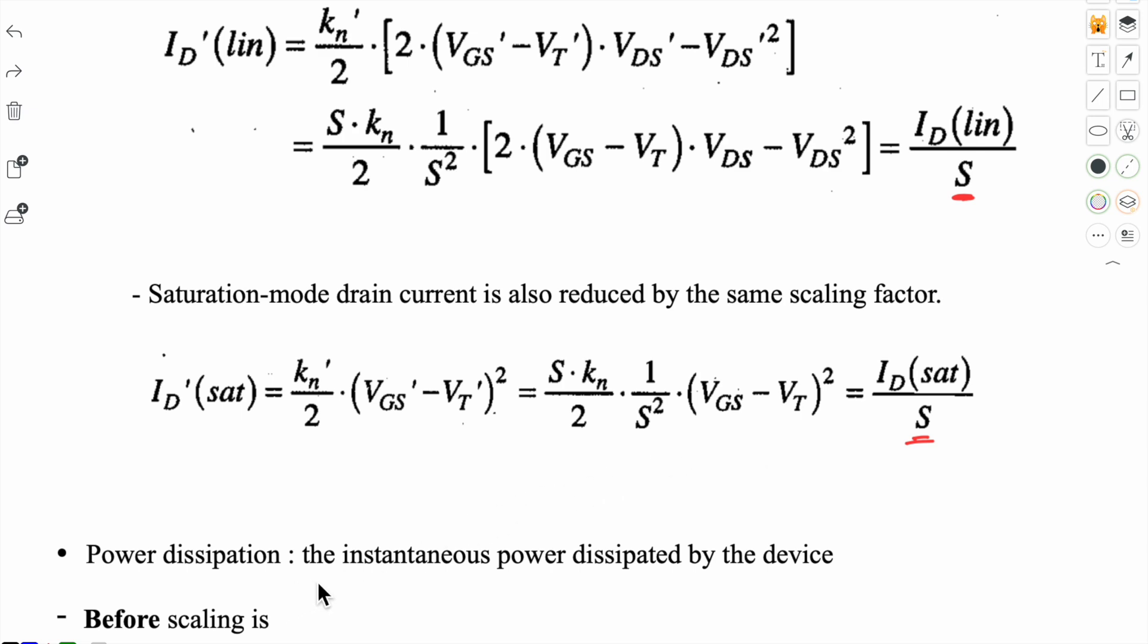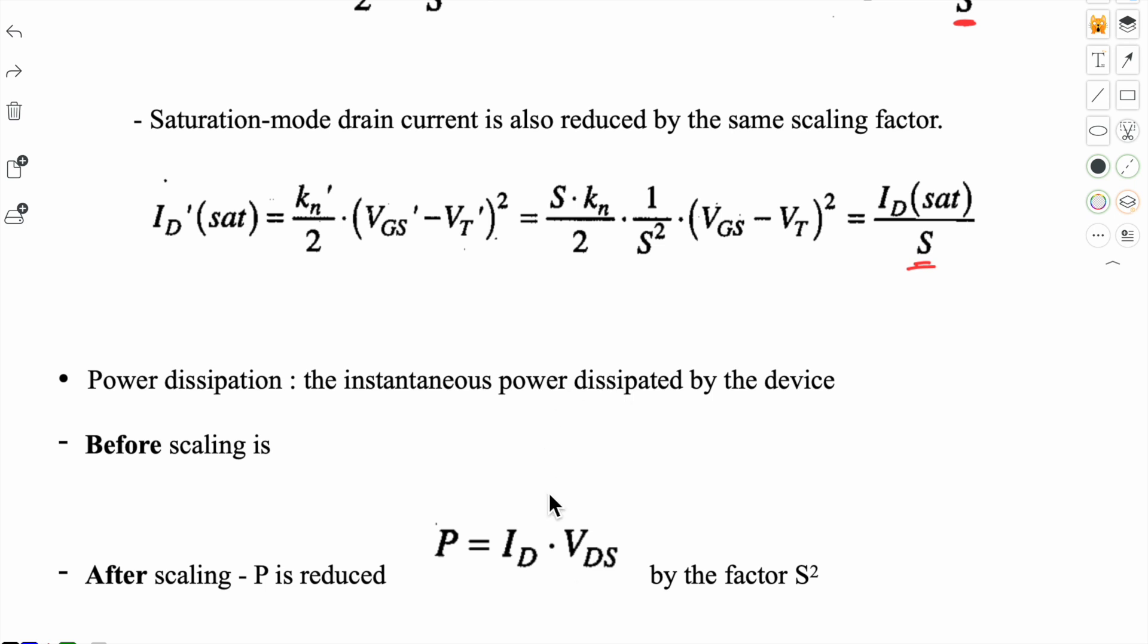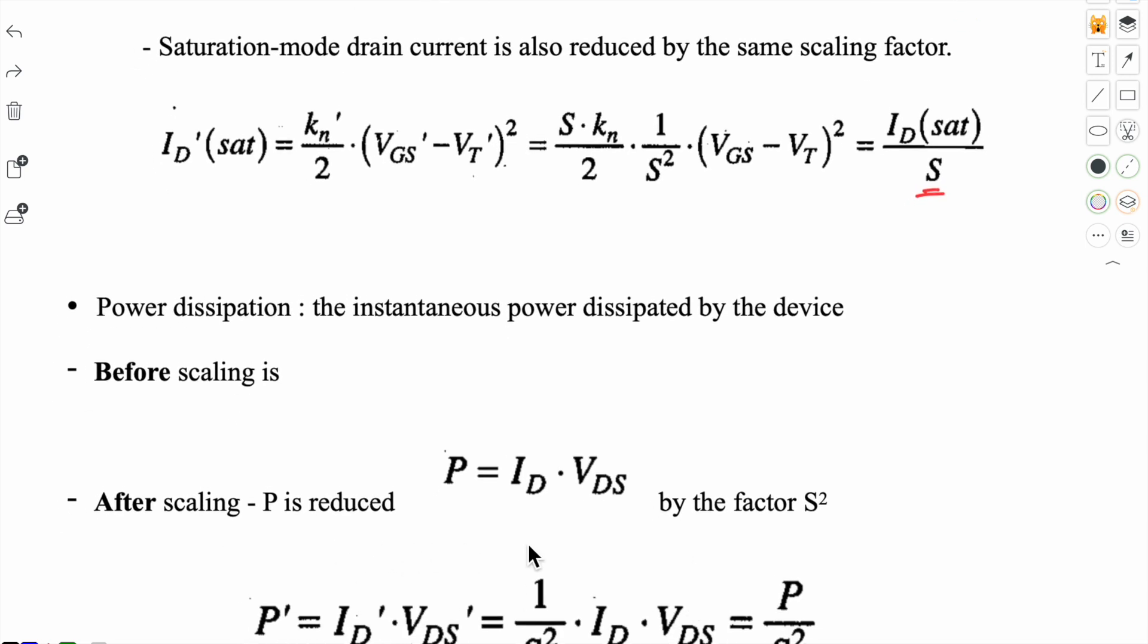Power dissipation is a very important point. What effect comes on our instantaneous power dissipation? Before scaling it is given by the formula I_D product V_DS. Drain current is scaling down, and whatever voltages we are applying, that is also scaling down. So overall, the power will reduce by a factor of S squared. Power dissipation gives us this advantage that it is scaled down by S square. So constant field scaling is very useful in cases where we want to have lower power dissipation.